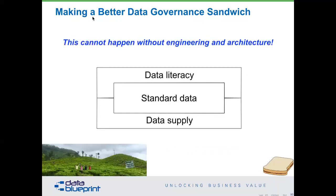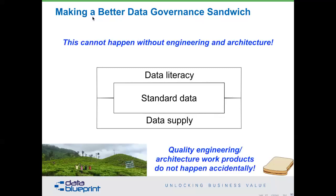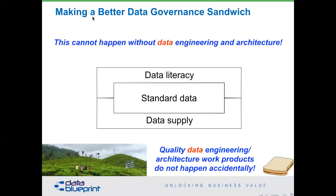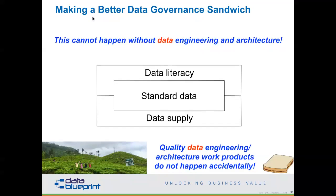I was on a tea farm in India a couple of years ago on vacation, and I found this wonderful quote: 'Quality engineering and architecture products do not happen accidentally.' Of course, we're talking data stewardship here, so we're talking data engineering and architecture. If these topics are not familiar to you, we need to start getting smarter about the process and looking for opportunities to educate ourselves — not mathematics that you're going to be computing, but understanding weak-link-in-the-chain types of things.